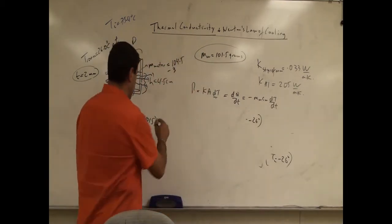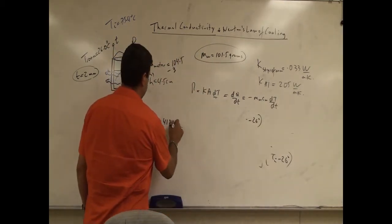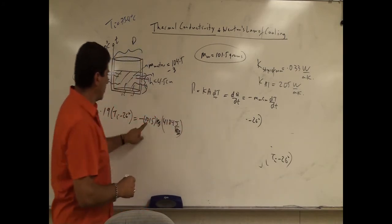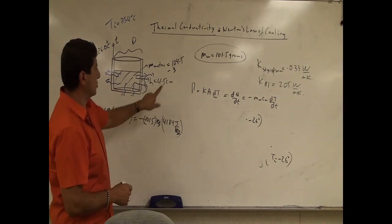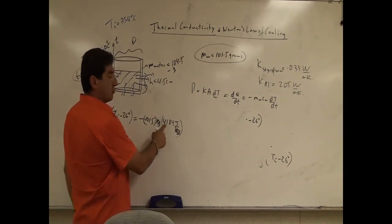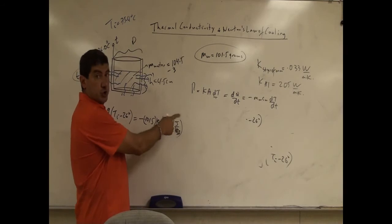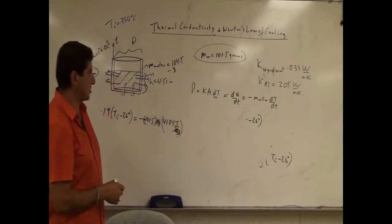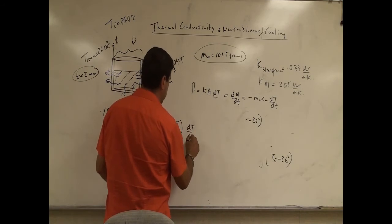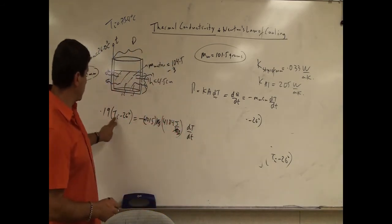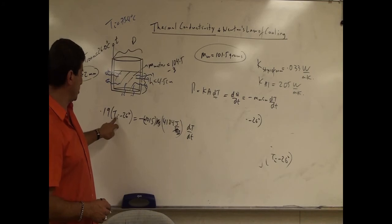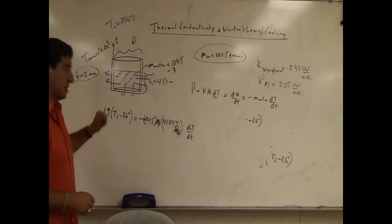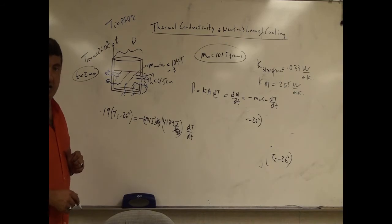I'll multiply by the specific heat of water, which is 4,184 joules per kilogram — the kilogram units cancel. I could have kept 101.5 grams and used 4.184 joules per gram; either way is fine as long as units cancel. So we have dT/dt. Since the inside temperature is changing over time, rearranging gives us Newton's law of cooling.